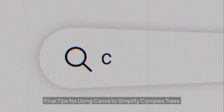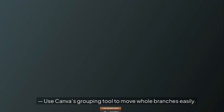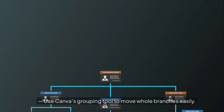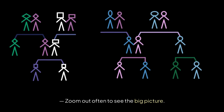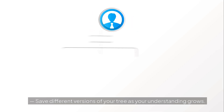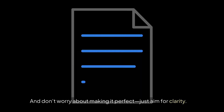Final tips for using Canva to simplify complex trees. Use Canva's grouping tool to move whole branches easily. Zoom out often to see the big picture. Save different versions of your tree as your understanding grows. And don't worry about making it perfect — just aim for clarity.